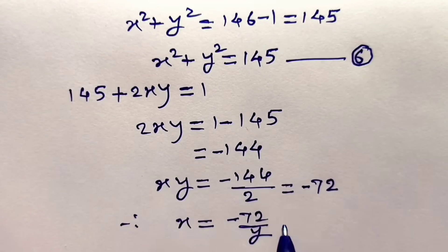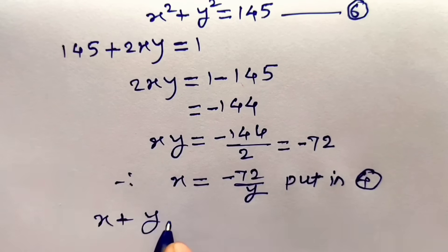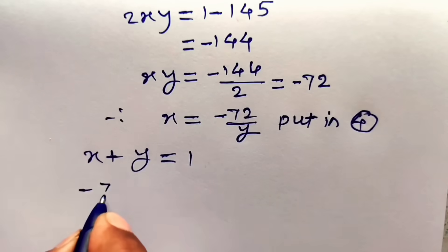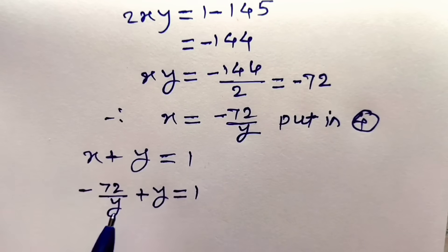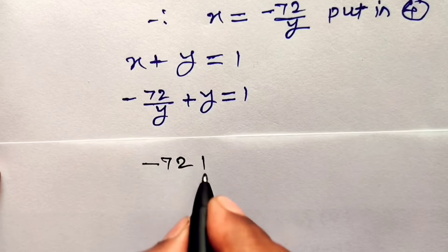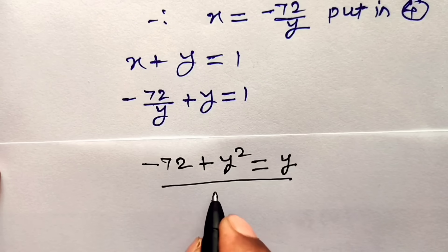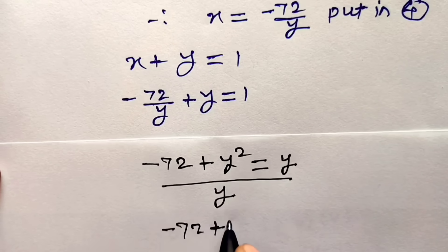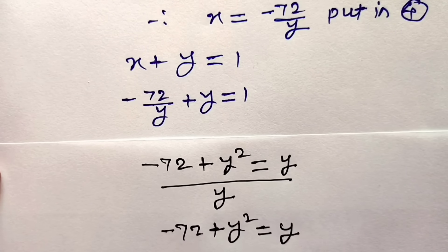Now put this value of x in equation number 4. Equation 4 is x plus y equals 1. Replacing x by minus 72 upon y, we get minus 72 upon y, plus y, equals 1. Making LCM as y on both sides, this can be written as minus 72 plus y squared equals y. So minus 72 plus y squared equals y, which is a quadratic equation in y. Consider this as equation number 7.